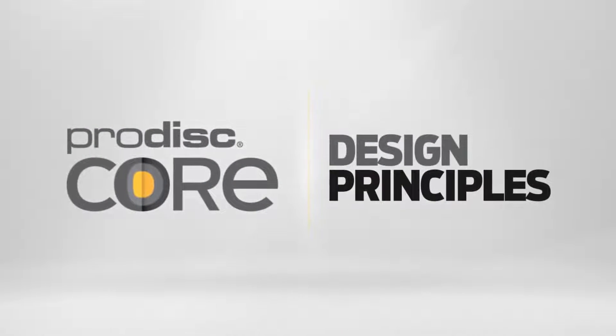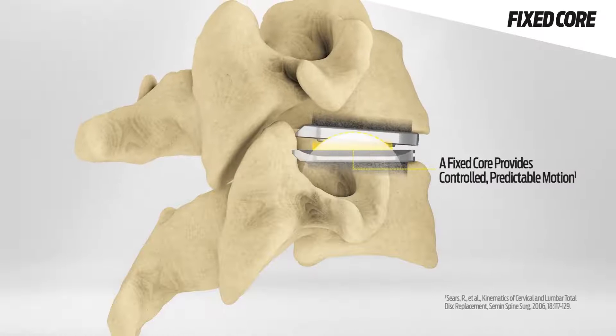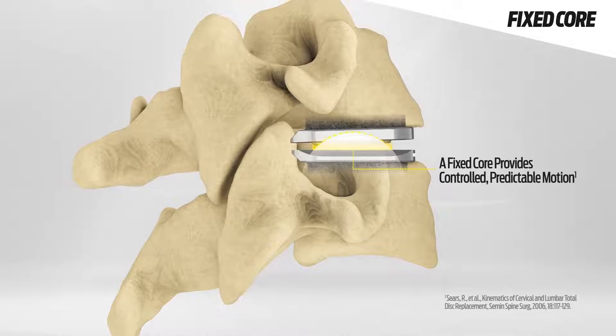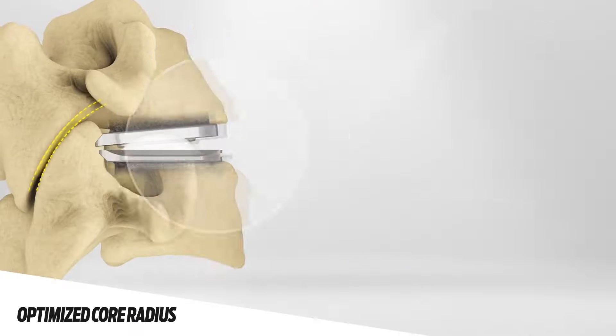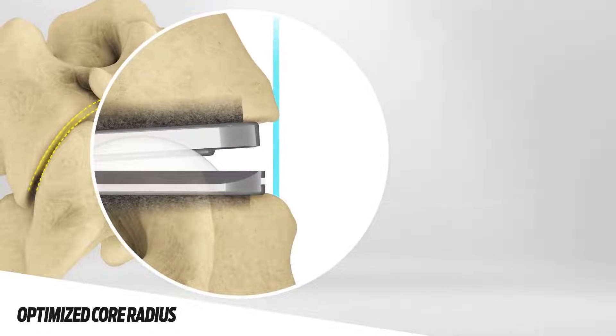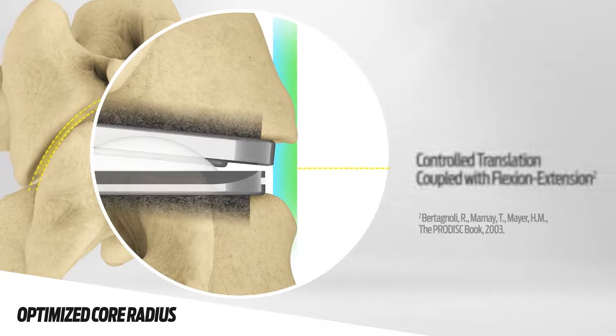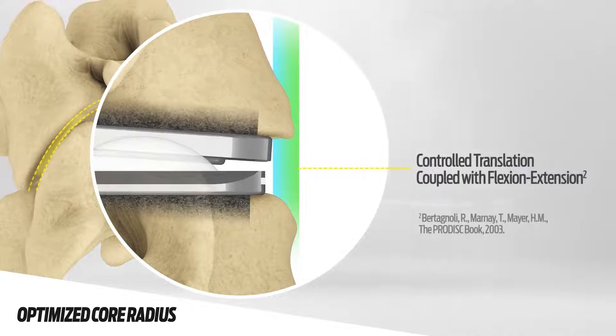ProDiscC Core features a combination of two critical design principles: a fixed core that provides stable, predictable motion while resisting shear forces, and an optimized core radius specifically designed to provide controlled translation coupled with flexion extension.